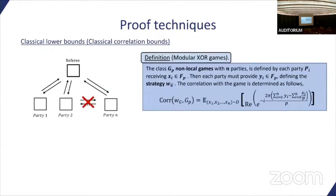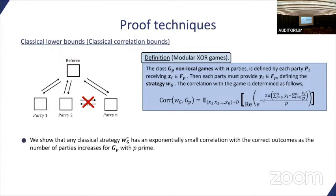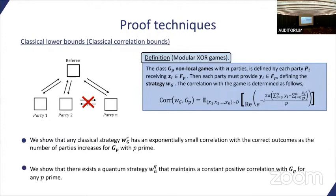On top of this, because we consider this family of relation problems, they will all be related to a specific family of non-local games. In particular, it's of the type of XOR non-local games. We define them and define the correlation function with which any strategy relates to the winning strategy. Then we are able to show that any classical strategy you can come up with has exponentially small correlation with the winning probability, with the winning strategy, while there exists a quantum strategy that maintains a constant positive correlation.